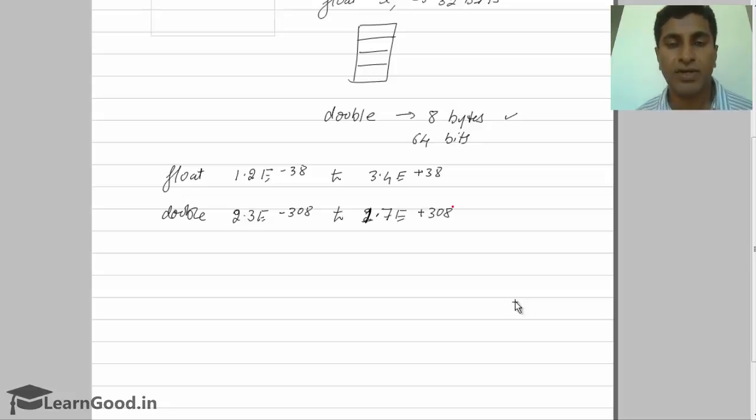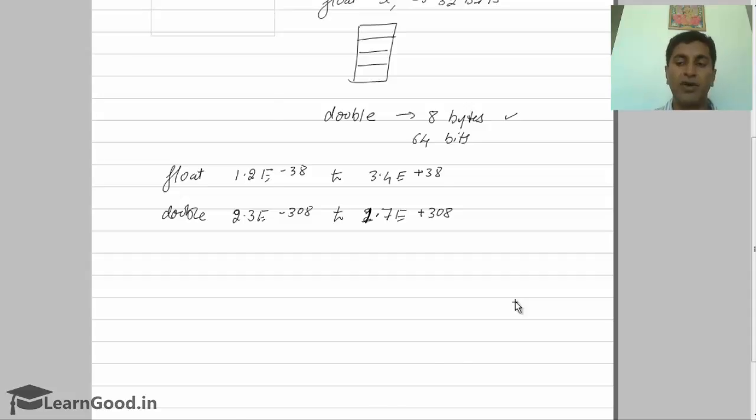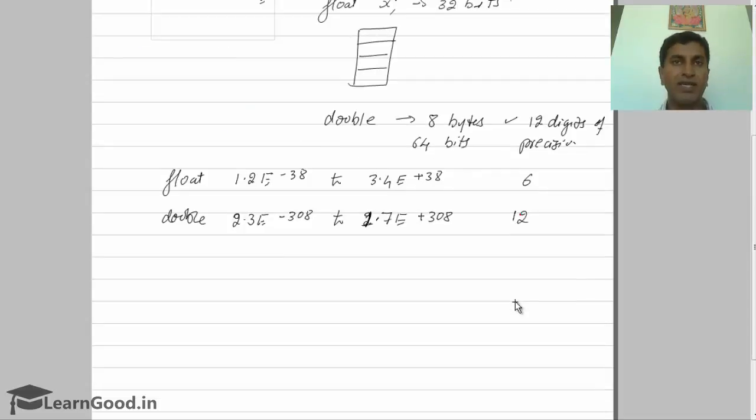The second main difference between float and double is precision. Float gives six digits of precision, whereas double gives 12 digits of precision. What do we mean by precision?